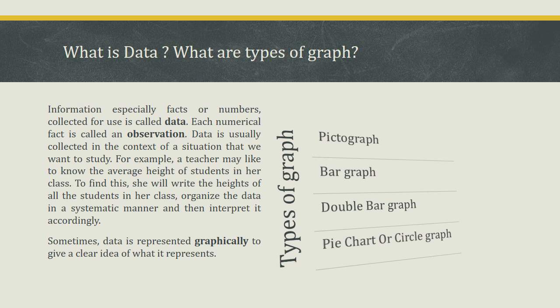Sometimes data is represented graphically to give a clear idea of what it represents. Some types of graphs are: pictograph, bar graph, double bar graph, and pie chart or circle graph.